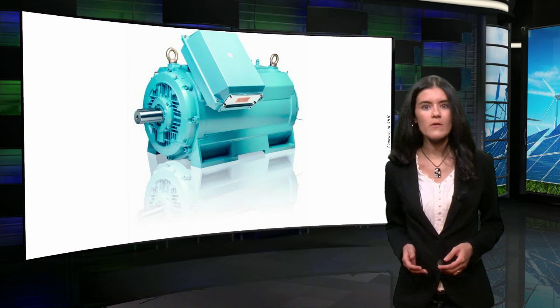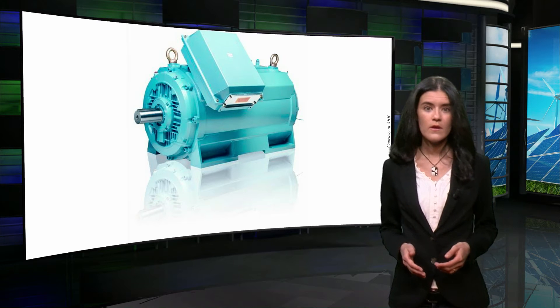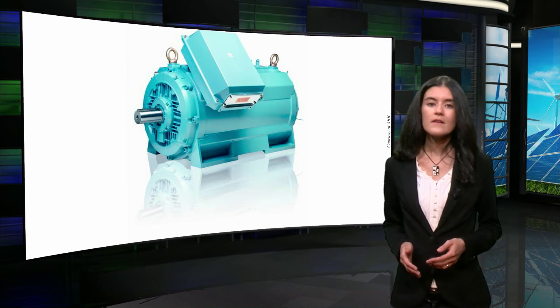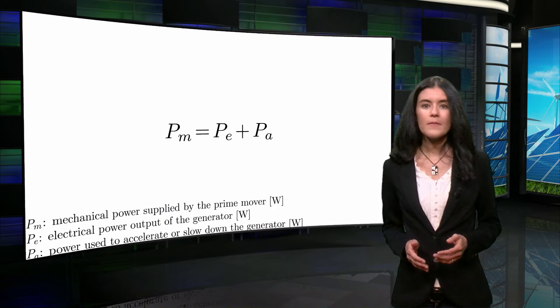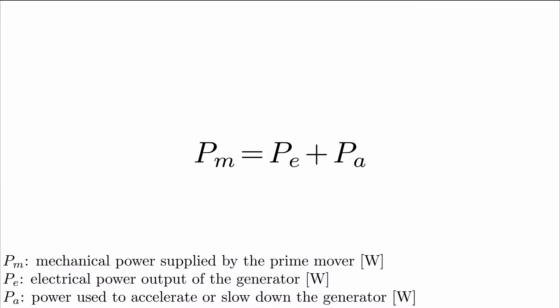In traditional power systems the active power balance is controlled by generators. When losses are neglected, the active power balance can be expressed as the equation shown in the screen. The mechanical power supplied to the generator accessed by the prime mover is equal to the electric active power, which is the output of the generator, plus the power accelerating or slowing down the generator.